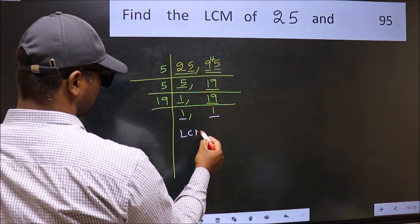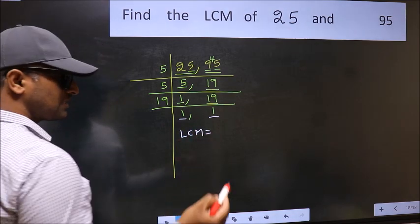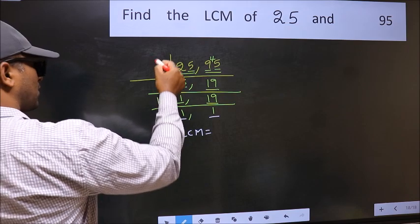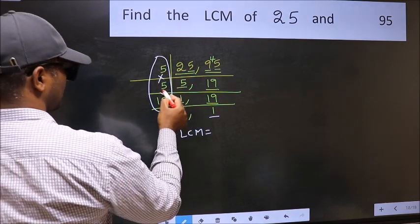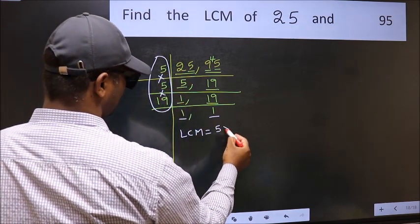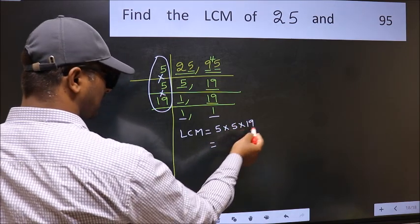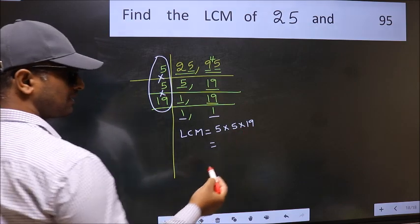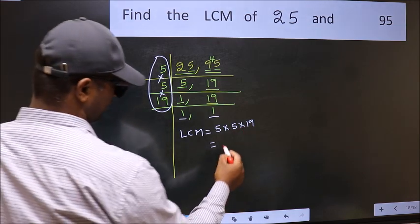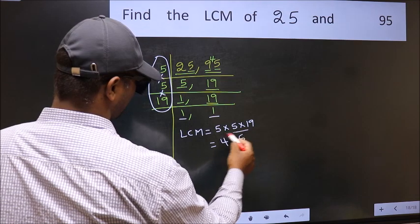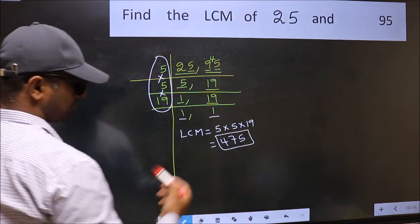So our LCM is the product of these numbers. That is 5 times 5 times 5 times 19. When we multiply these numbers, we get 475 is our LCM.